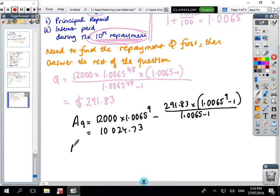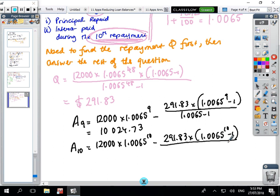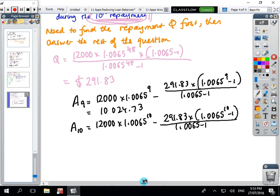After 10 payments, A₁₀ = 12000 times 1.0065 to the power of 10 minus 291.83 times (1.0065^10 - 1)/(1.0065 - 1). After 10 payments you owe $9,798.06.